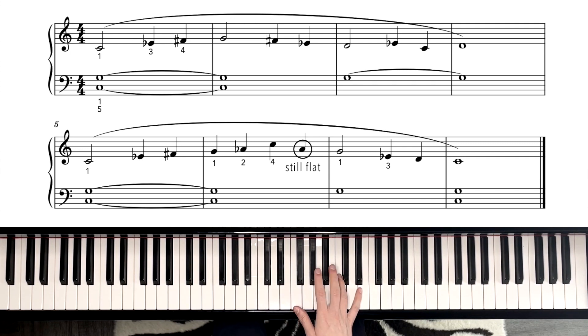So as you could see in the second bar of the second line, the last A is still an A flat because it's in the same bar. So be careful with that. Both A's are flat.